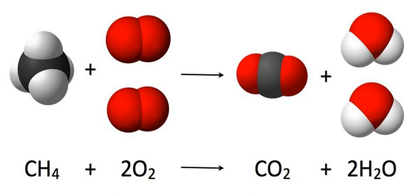A chemical equation is the symbolic representation of a chemical reaction in the form of symbols and formulae, wherein the reactant entities are given on the left-hand side and the product entities on the right-hand side.